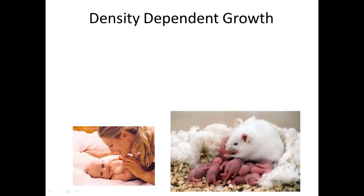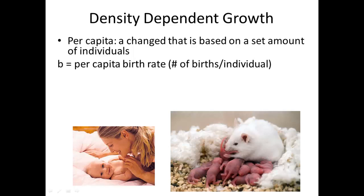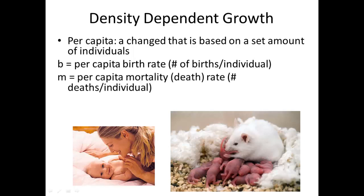If we have that information, we can also look at the per capita growth — per individual, how much change is going on. Lowercase b represents the per capita birth rate, the number of births per individual. M is the per capita mortality rate per individual. B minus M equals the per capita rate of increase. If you have more births than deaths, it will increase; if you have more deaths than births, it will decrease, associated with a positive or negative value.